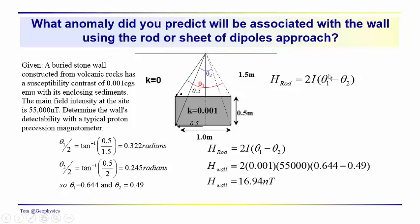Coming back to this expression which we derived, we're just plugging in those angles. We have 2 times the susceptibility times the intensity of the magnetizing field times the difference in the subtended angles, and we get 16.94 nanoteslas, call it 17 nanoteslas. Remember when we did this using the horizontal cylinder as a simple geometrical object to represent this wall, we came up with approximately 18 nanoteslas.